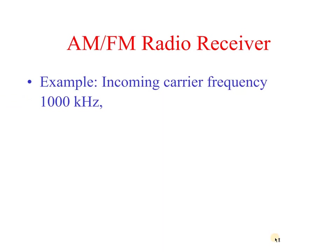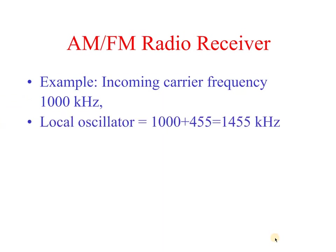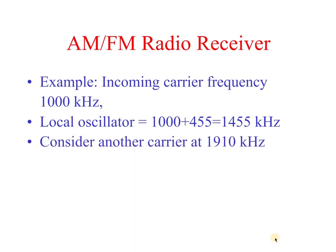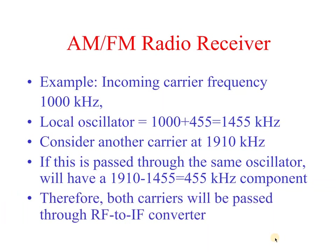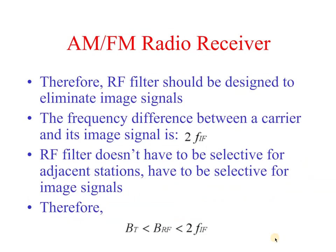For example, consider an incoming carrier frequency of 1000 kHz. The local oscillator frequency is 1000 + 455 = 1455 kHz. Now consider another carrier at 1910 kHz; passing through the same oscillator gives 1910 − 1455 = 455 kHz. Therefore both carriers will be passed through the RF-to-IF converter, and the RF filter must be designed to eliminate these image signals.